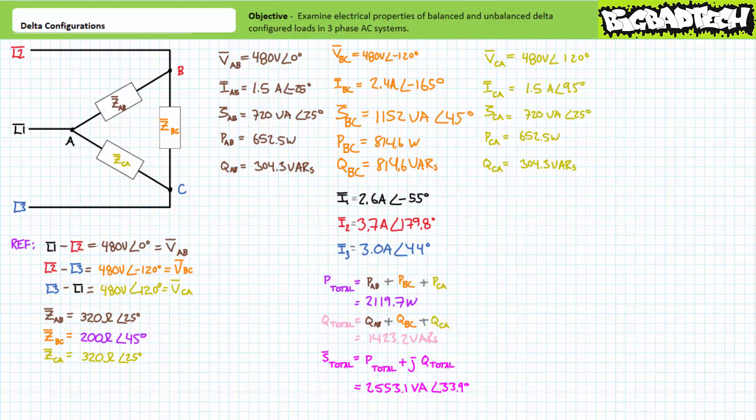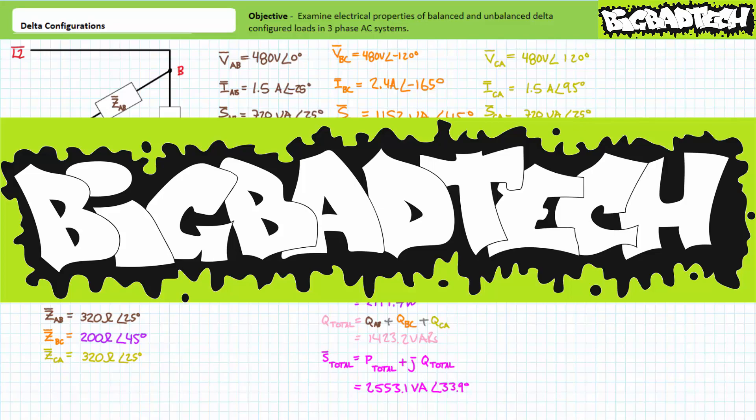In conclusion, this lecture examined the analysis of balanced and unbalanced delta-configured loads in three-phase AC systems. Load impedances in delta configurations experience the line-to-line voltage, and line current is the summation of an outgoing and incoming load current. In a balanced delta configuration, line current magnitude is square root three, or roughly 1.73 times the nearest load current magnitude, and exhibits a relative 30-degree phase-shifted offset. In unbalanced configurations, these shortcuts are not true. Total apparent, total real, and total reactive power for any configuration is the summation of individual apparent, real, and reactive power figures. Remember to review these concepts as often as you need — thank you very much for your attention, and we'll see you again during the next lecture.